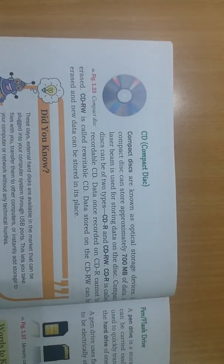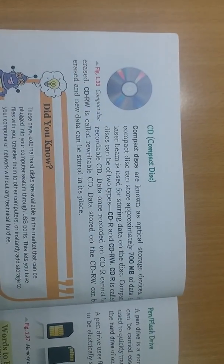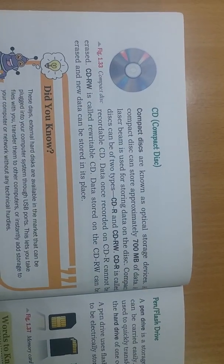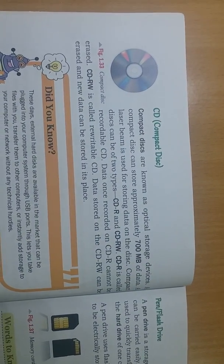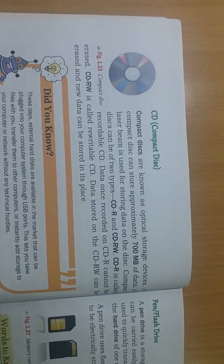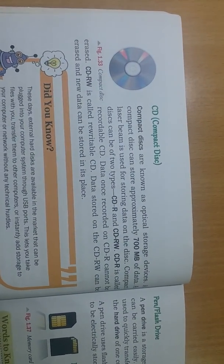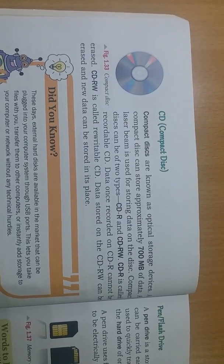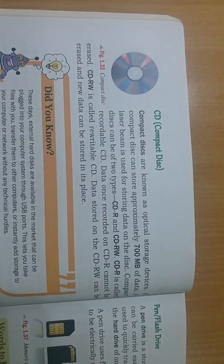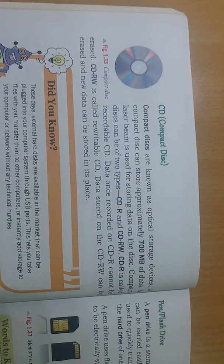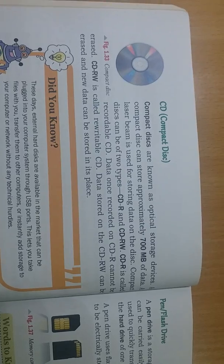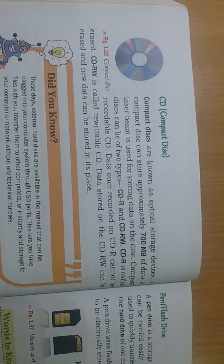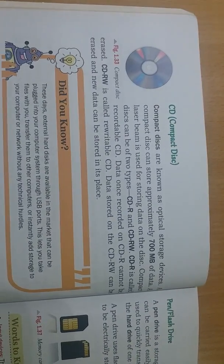The next secondary storage is the CD, which is an optical device where we can store approximately 700 MB of data. CDs are of two types: CDR, where we can store data once and read only, and CDRW, where we can read and write data according to our convenience.